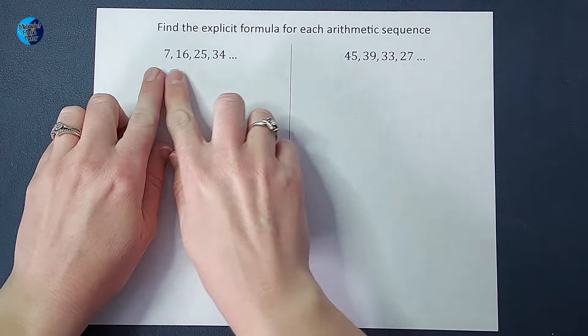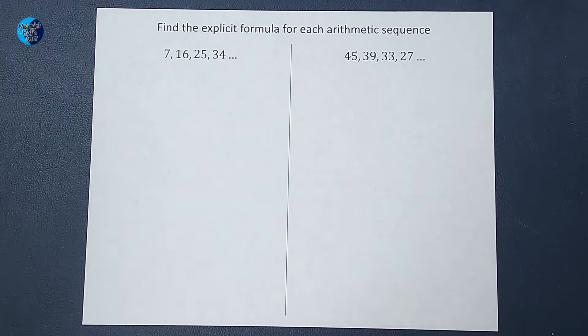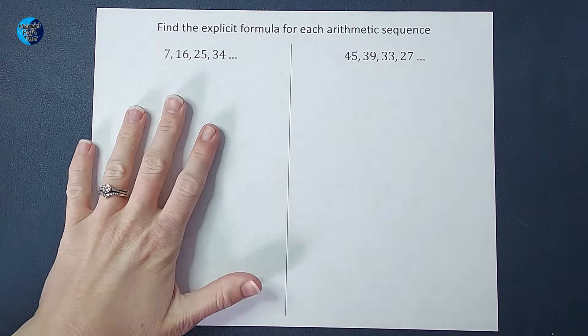So these are sequences, meaning these numbers are related to each other in some way. They're not just a random list of numbers. So the first thing I'm going to do is figure out the pattern here.